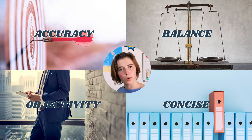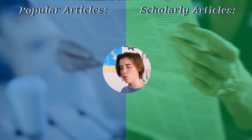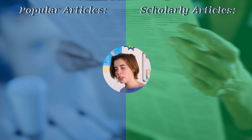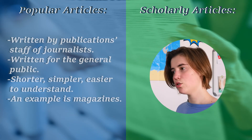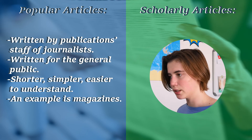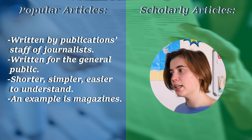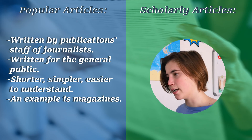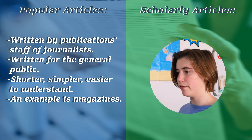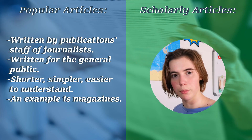With news stories out of the way, let's move on to articles. There are two types of articles you can look out for: popular articles and scholarly articles. Popular articles are written by publication staff or journalists, written for the general public, and are shorter, simpler and easier to understand. A great example would be one you find in a magazine.